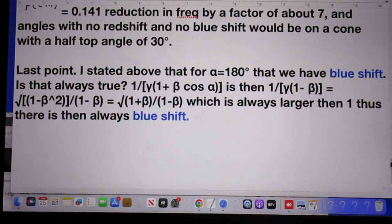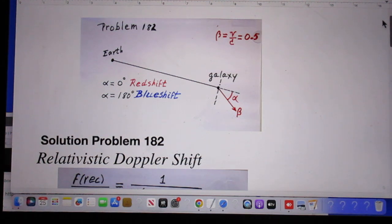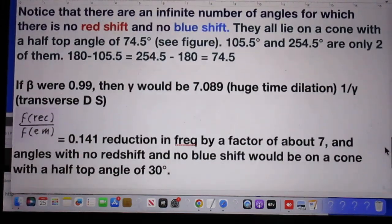A last point. I stated above that for alpha is 180 degrees that we have always blueshift. Is that always true? Notice that I stated that here. It's obvious that we always have redshift when alpha is 0 degrees. Figure that out for yourself. But is it true that we always have blueshift if the galaxy is moving in our direction?